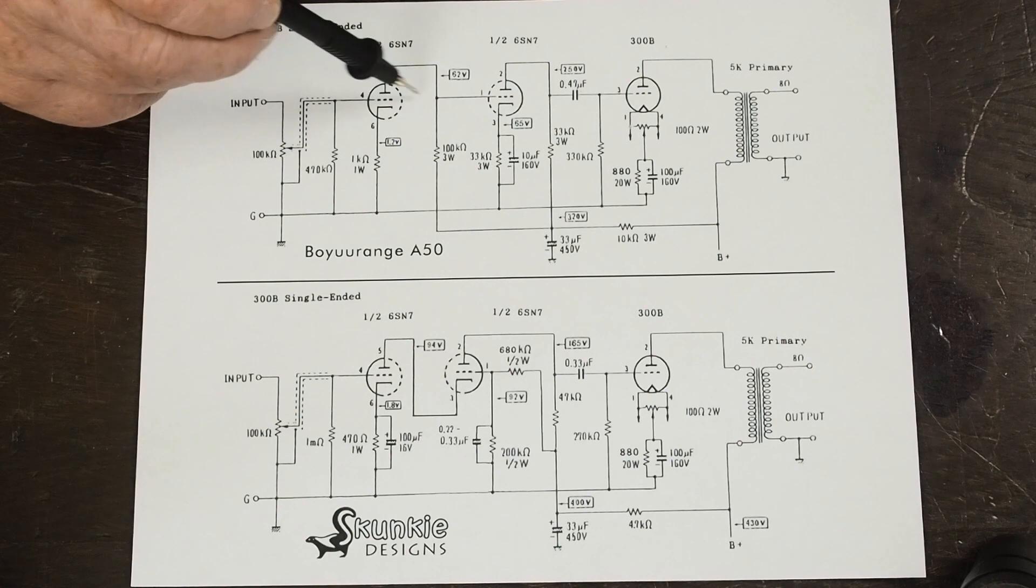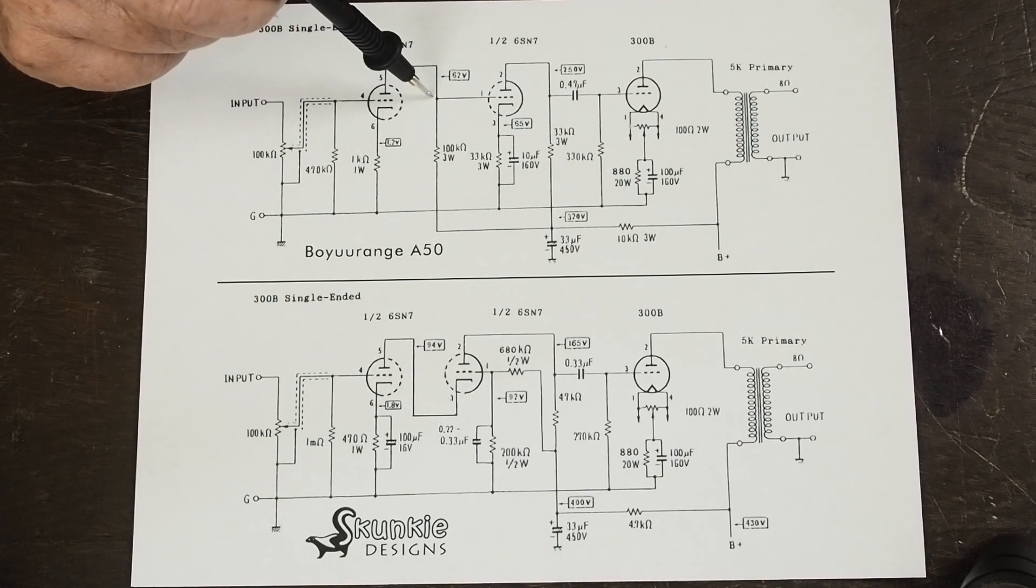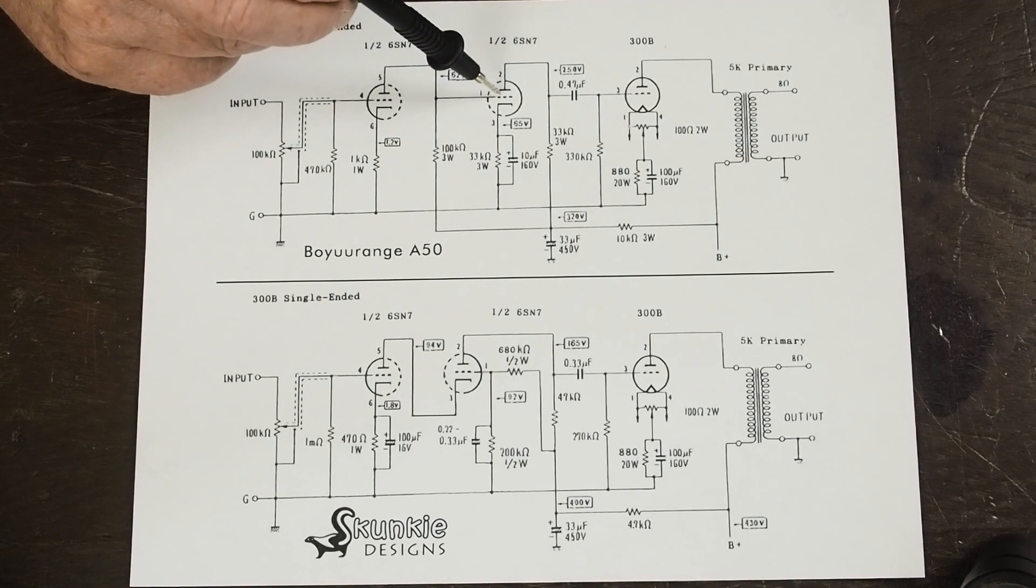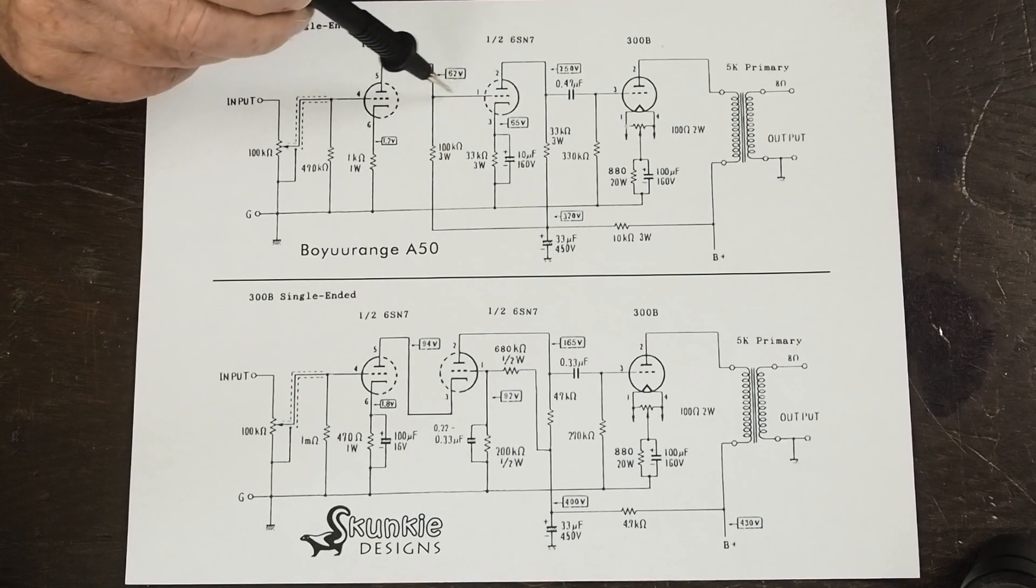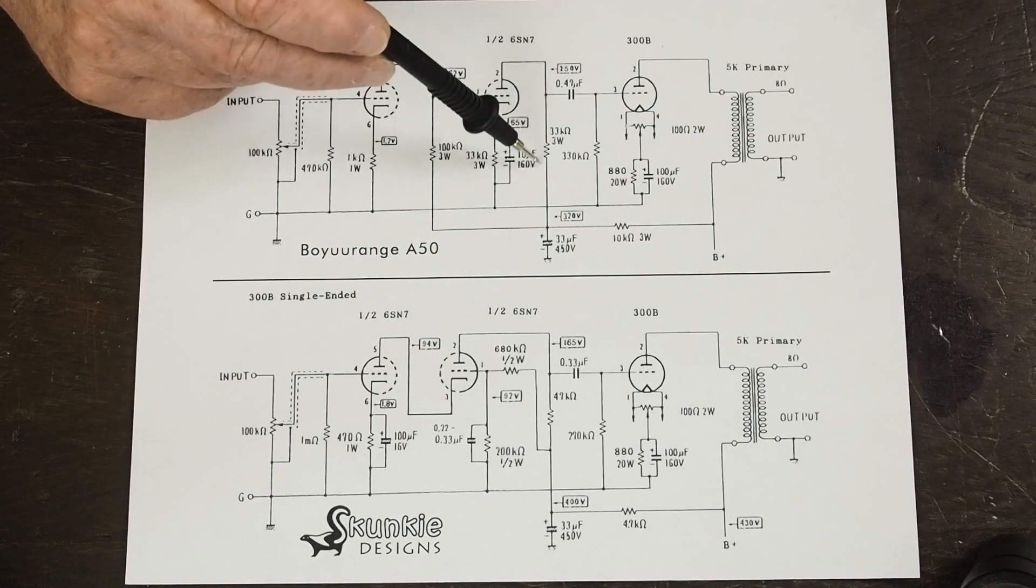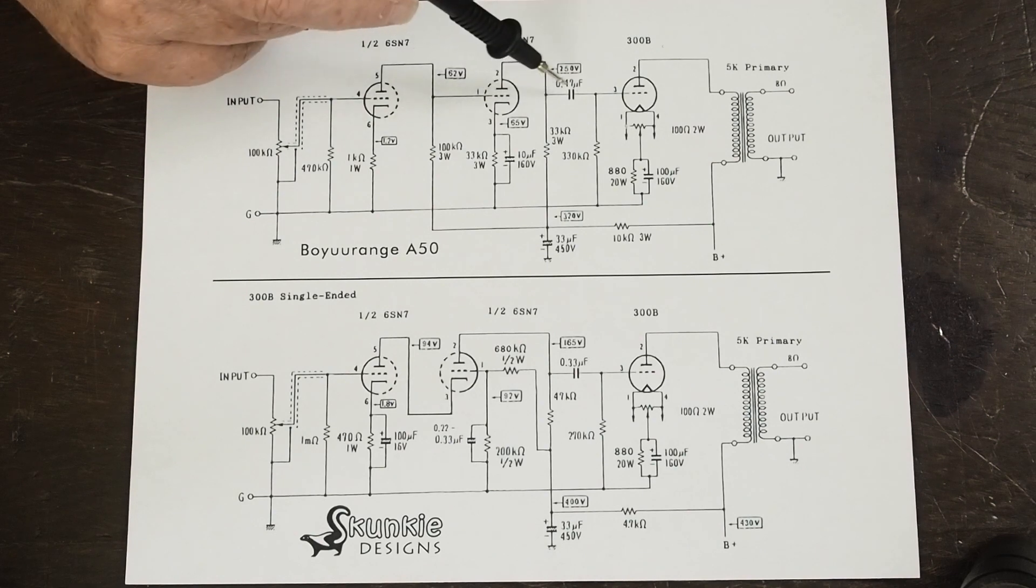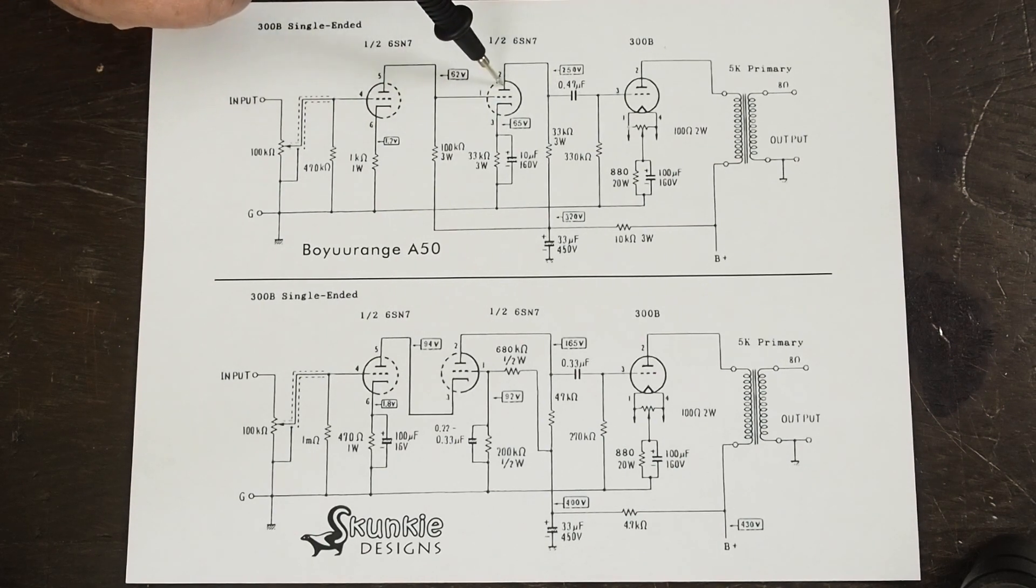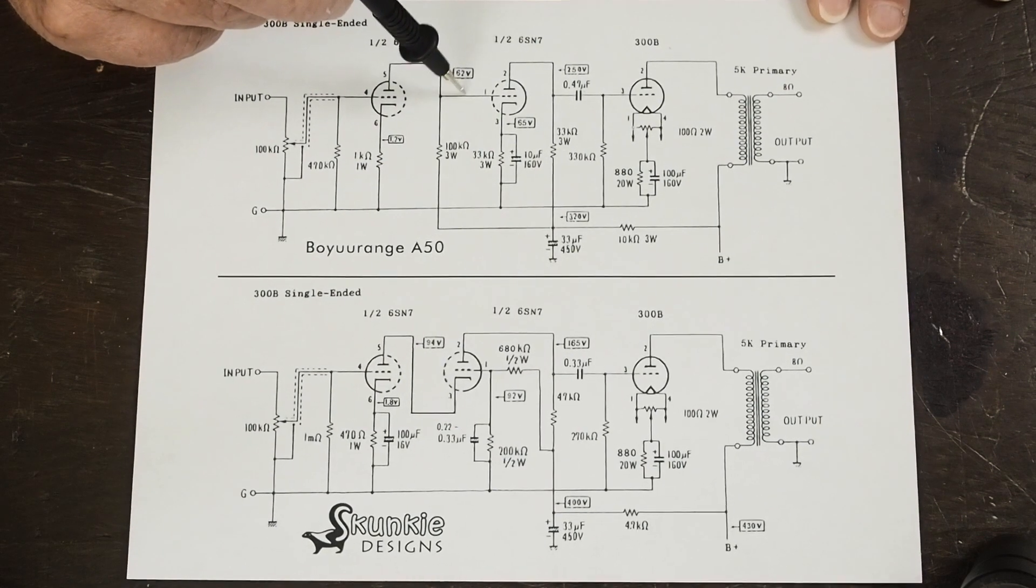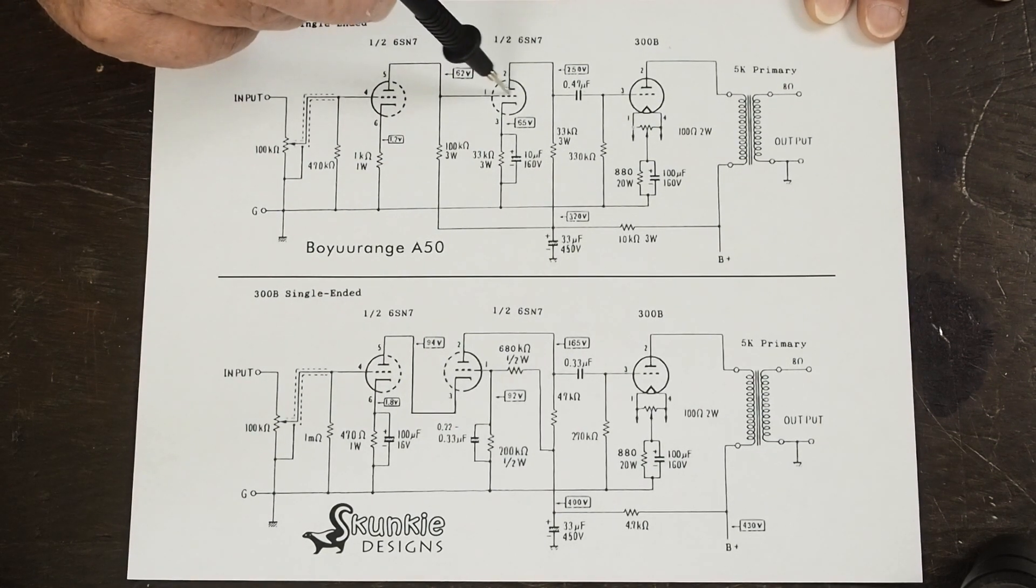So at that point, this voltage that's been amplified from what's here goes into the grid of this tube. And same thing happens is this goes up and down. It varies the current across here. It varies the voltage drop across this plate load resistor, which amplifies the signal. This is what's referred to as a two-stage driver. First it goes through the grid of this tube, then it goes through this one, and it's called a direct coupled in that there's no coupling capacitor here. The plate of this is connected directly to the grid of this.